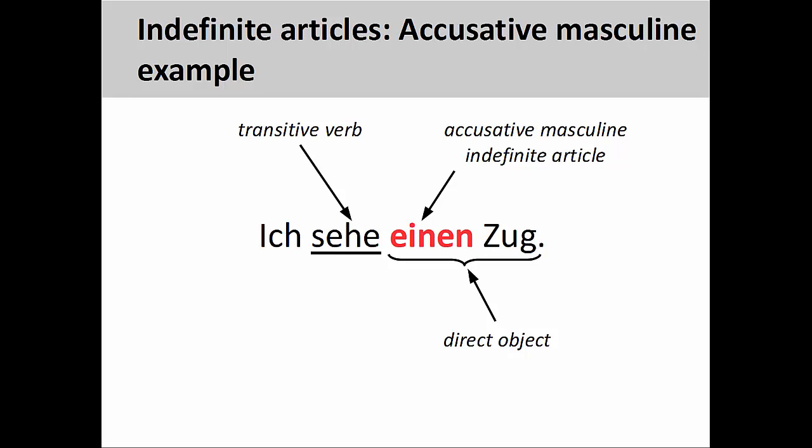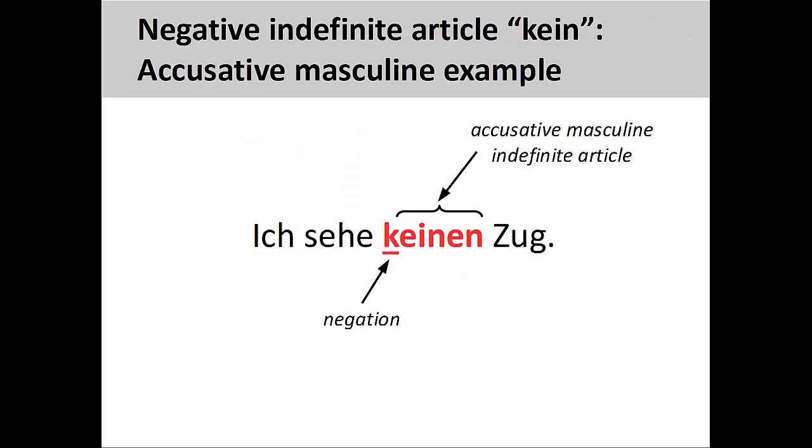Let's take a closer look at how kein functions. In the sentence you see here, ich sehe einen Zug — I see a train — the direct object of the sentence is einen Zug, as it receives the action of the verb sehe. The direct object is indicated by the masculine accusative ending on the indefinite article. To negate this sentence, we simply need to change einen into keinen: ich sehe keinen Zug — I don't see a train, or I don't see any train.